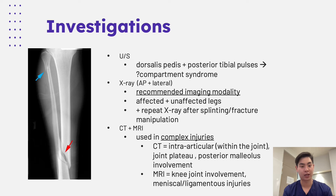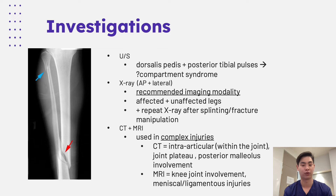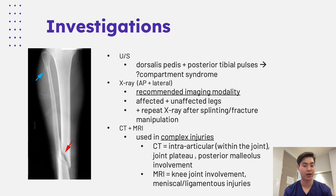Moving on from history and exam, we're looking at investigations. As a first-line mainstay, it would be x-rays, but we would consider ultrasound mostly to assess for neurovascular compromise — using the Doppler component to look for the dorsalis pedis and the posterior tibial pulse to see if they've been affected. When looking at x-rays, we take two views: AP and lateral, as well as looking at the unaffected leg to compare. With all fractures, we also want to repeat the x-ray after we've splinted or surgically managed the fracture.